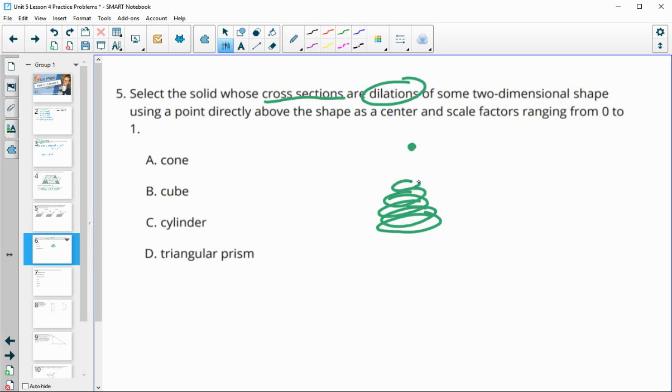So a cone would just be circles down up until we got to that point. So a cone would certainly work here. A cube would not because a cube is just going to be the same cross sections over and over and over all the way up to the top. And they're going to stay the same in order to make that cube. So cube would not work.